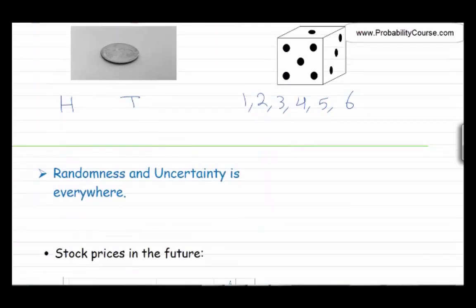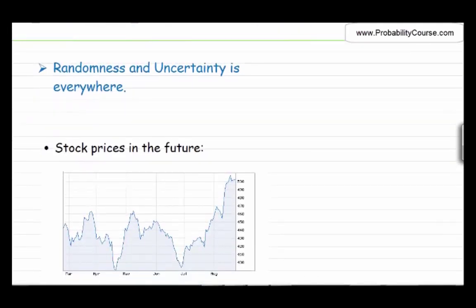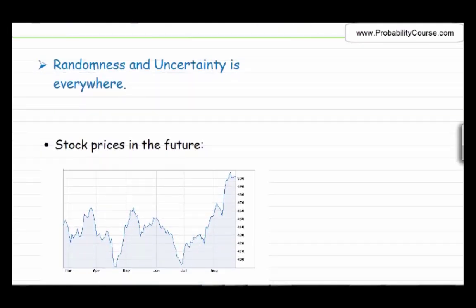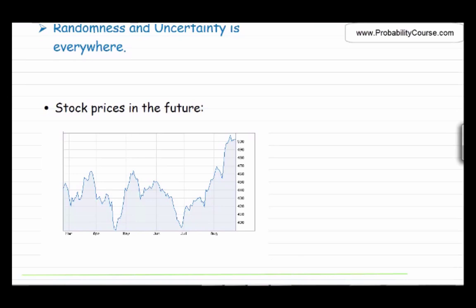Because randomness and uncertainty is everywhere, it is not surprising that probability is used extensively in different areas of science, technology, and engineering. Let's look at finance, for example. In finance, we cannot predict the stock prices in the future with certainty. If this diagram shows the stock price of a company, and we are in, let's say, June, right now, this is now. We can look at the stock prices in the past, and we know them with certainty. But we cannot predict the stock prices in the future with certainty. If we could, we would all be rich. So that's why we need to build probabilistic models for stocks. And that's why probability is used extensively in finance.